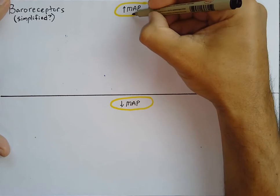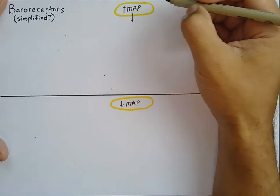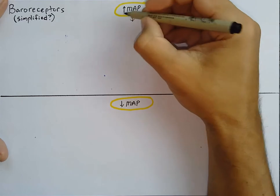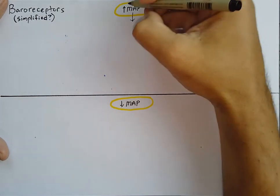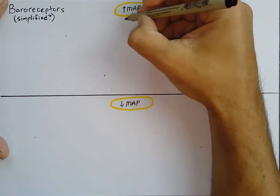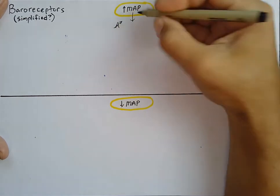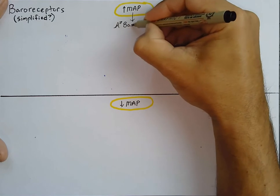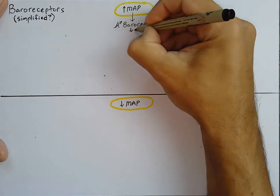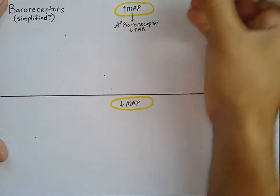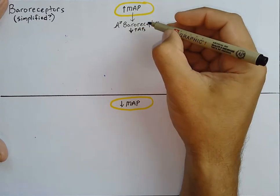As blood pressure increases, if we're dealing with baroreceptors, the first thing that's going to happen is that those baroreceptors in the aortic arch and the carotid sinus are going to increase their firing. They're going to send more action potentials up to the CVCC in the medulla oblongata. So let's write that in: if there's an increase in mean arterial blood pressure, we are going to activate baroreceptors, which is going to end up sending more action potentials — increasing APs — going to the cardiovascular control center found in the medulla oblongata.